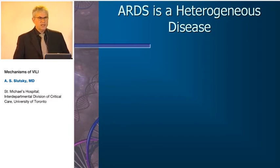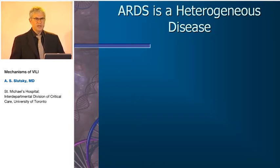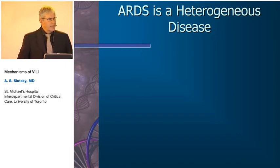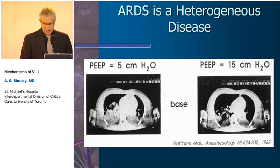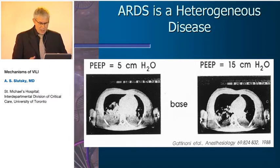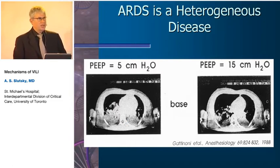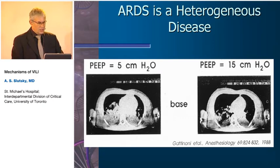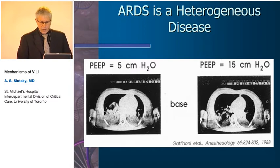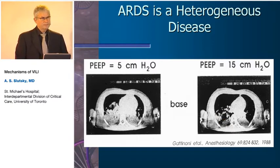Before going on to mechanisms of ventilator-induced lung injury, it's useful to consider some key physiologic concepts. The first is that ARDS is a heterogeneous disease. For many years we thought it was relatively homogeneous — chest X-rays show infiltrates seemingly everywhere. But we've known for a couple of decades, largely based on CT scan data, that it's a heterogeneous disease. You can see on a CT scan the heterogeneity in the distribution of consolidation, fluid, and open alveolar units, with much of the consolidation in dependent lung regions and relatively open non-dependent regions.